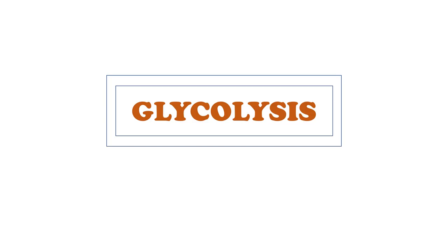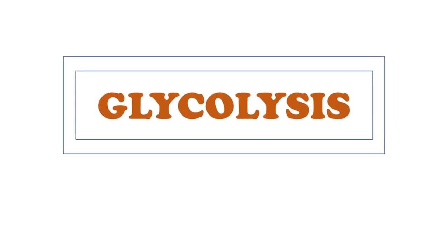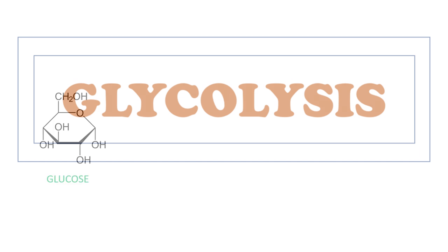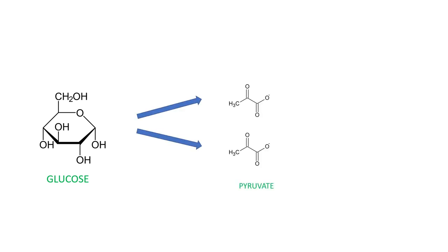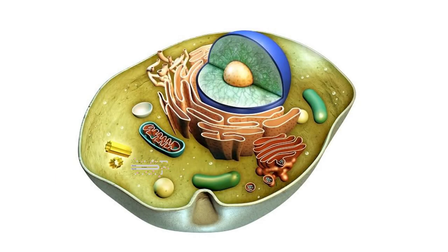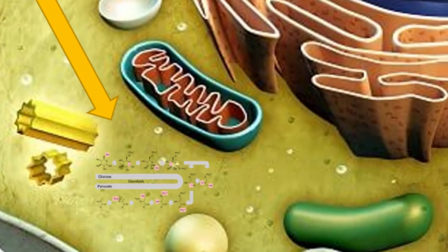Welcome to the channel. Today we're going to talk about glycolysis. Glycolysis is a process in which one glucose molecule is catalyzed to two pyruvate molecules. We also gain two ATP molecules, and this process is anaerobic, meaning it does not need oxygen. The whole process takes place in the cell cytoplasm and has 10 steps.